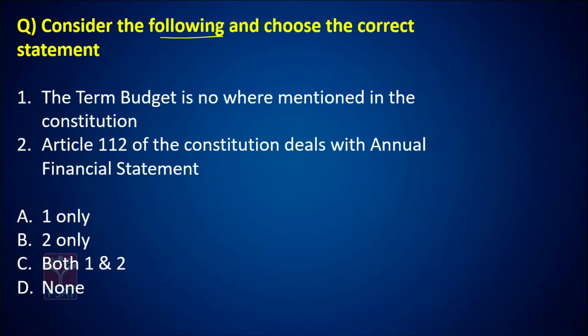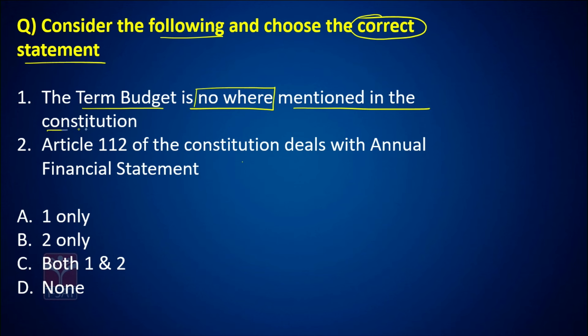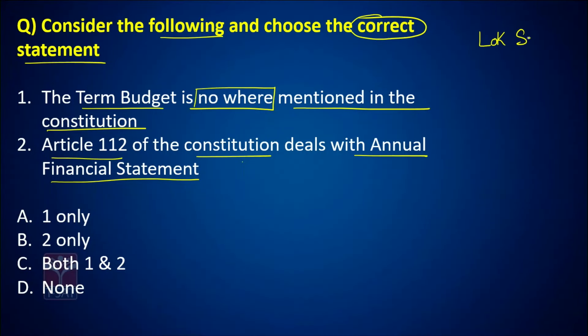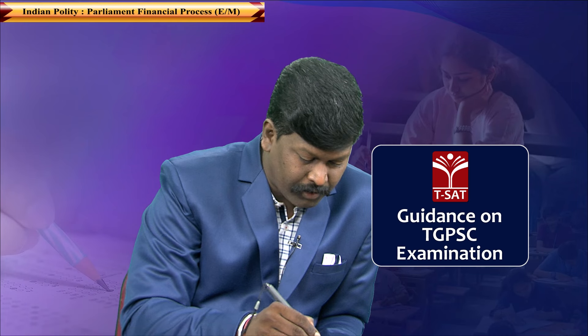Consider the following and choose the correct statement. Statement 1: The term 'budget' is nowhere mentioned in the constitution. Statement 2: Article 112 of the constitution deals with annual financial statement. There are a few important terms not mentioned in the constitution — like Lok Sabha, Rajya Sabha, Federation, and budget. These terms are nowhere mentioned in the constitution, so Statement 1 is correct.